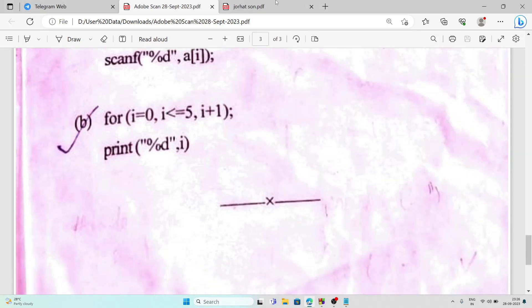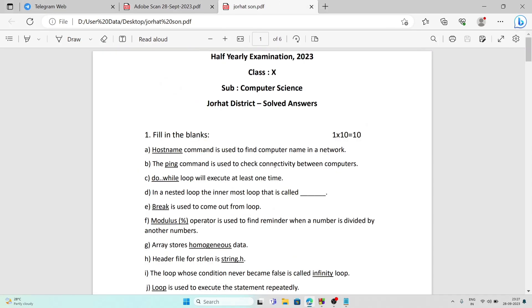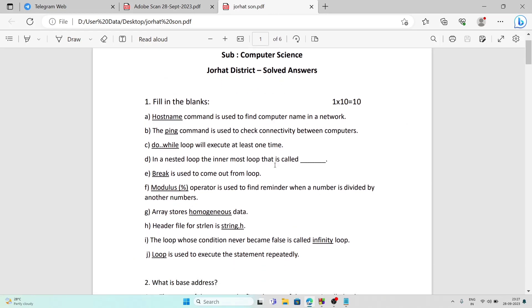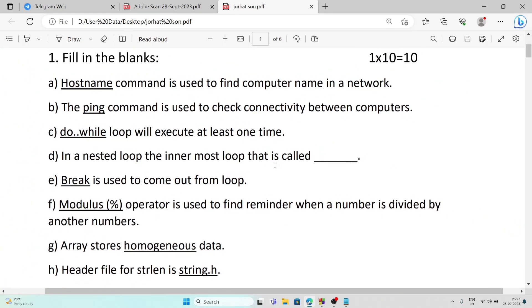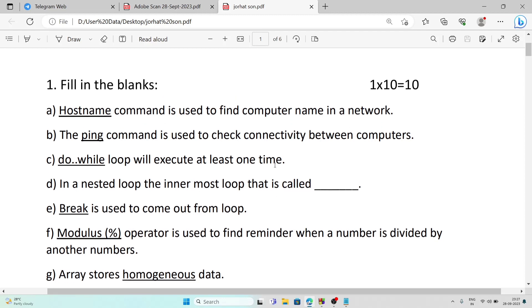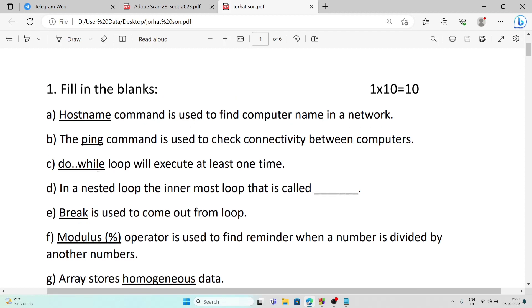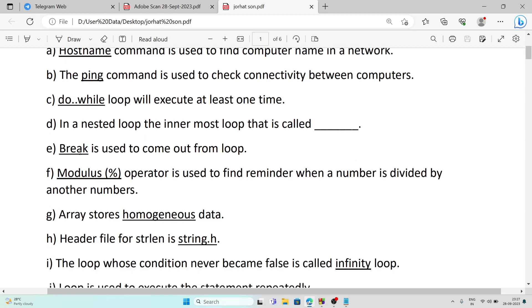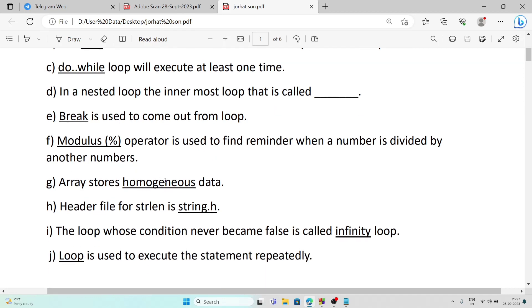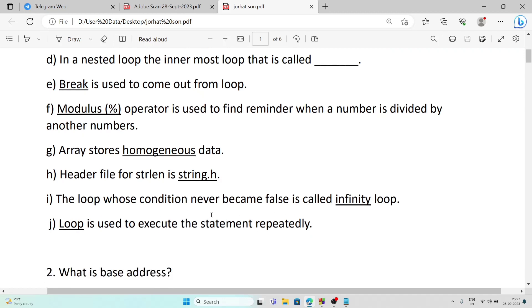These are the questions. Now let's come to the answers. Here are the answers. First fill in the blanks: first answer will be hostname, second answer ping command, number C will be do-while, number D the sentence is wrong so I have not solved it, number E it will be break, number F modulus, number G homogeneous data, number H string.h, number I infinite loop, number J loop.